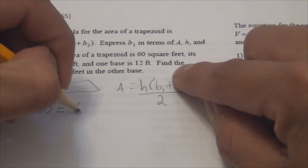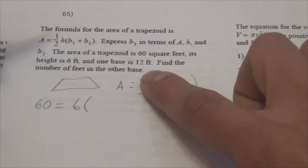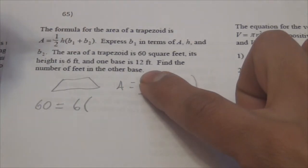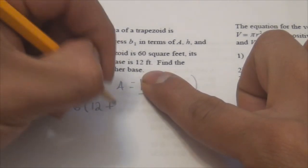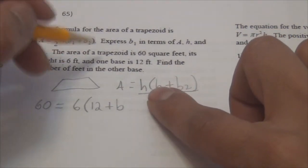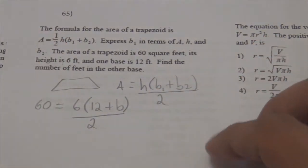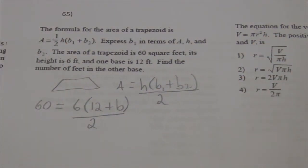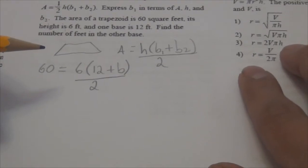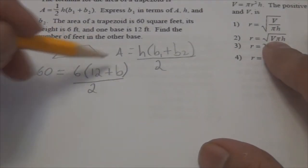The height is 6 feet, and one of the bases is 12 feet. So: 12 plus the other base — I really don't know what it is. Find the number of feet in the other base. Remember everything is divided by 2. I'm going to use algebra. Let's solve for B using the distributive property.